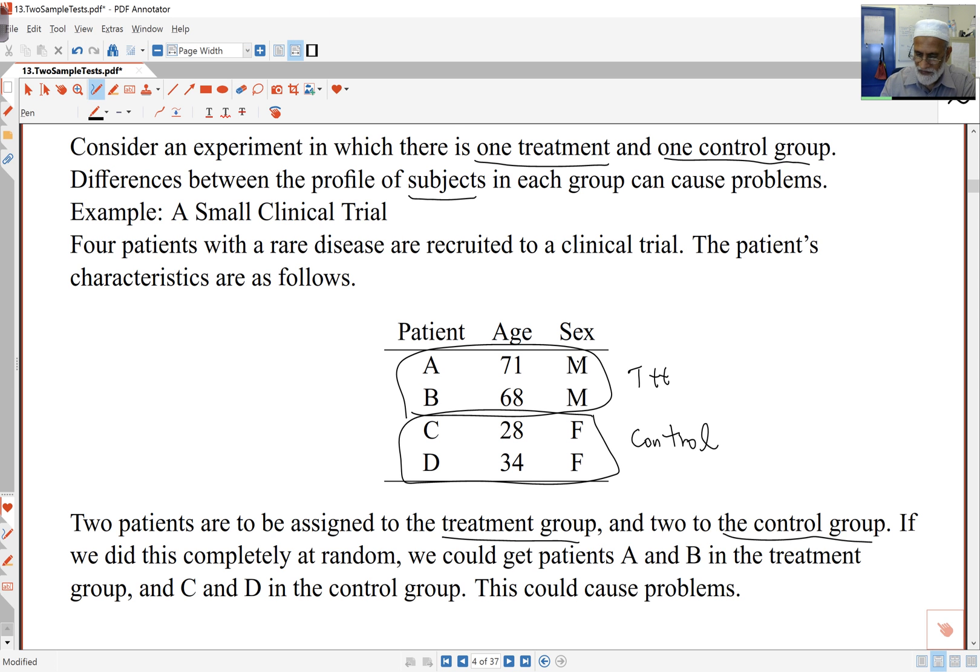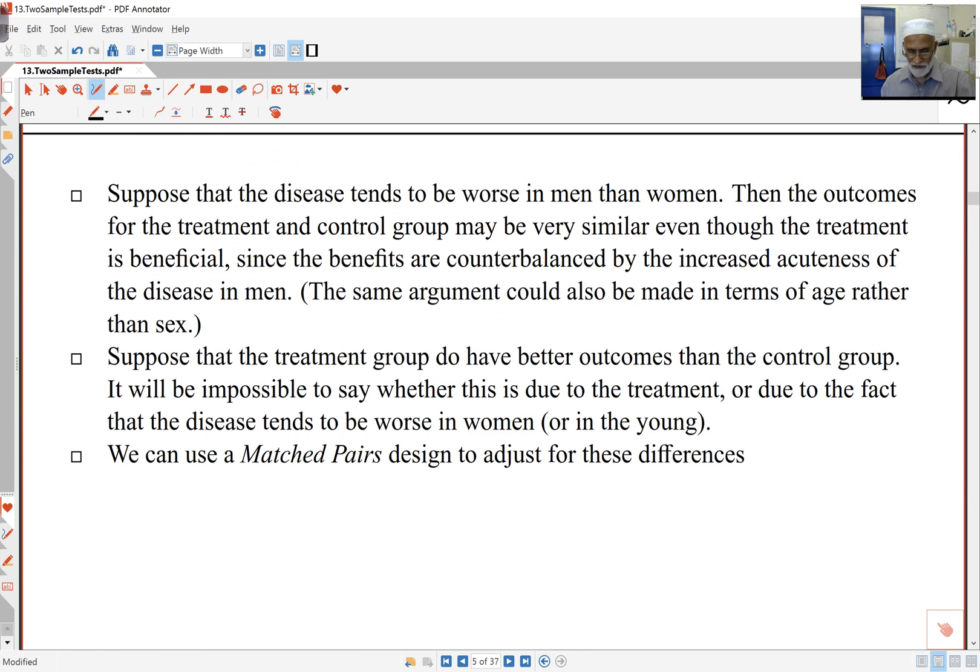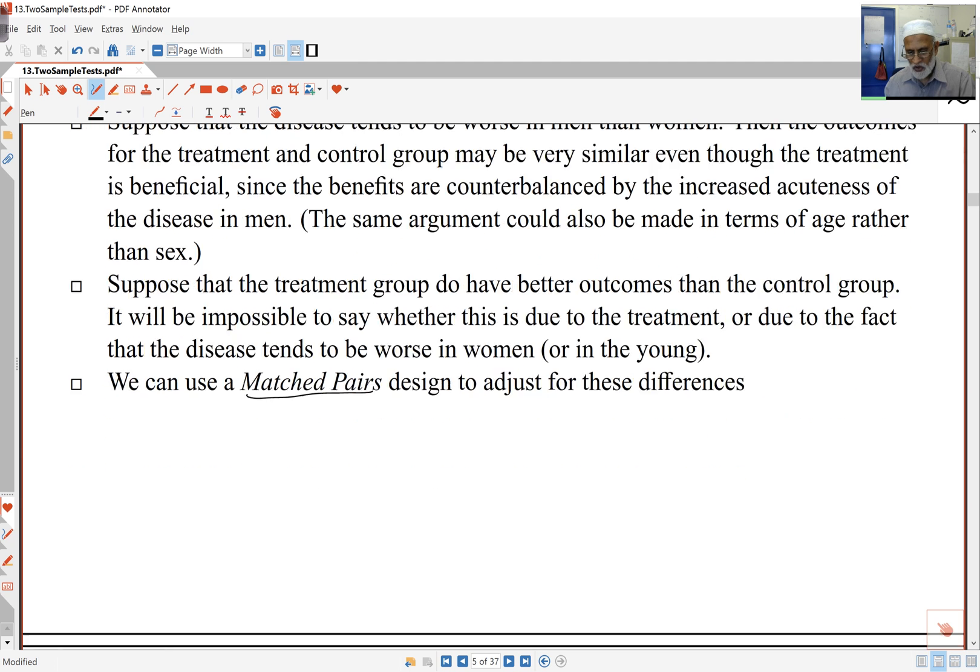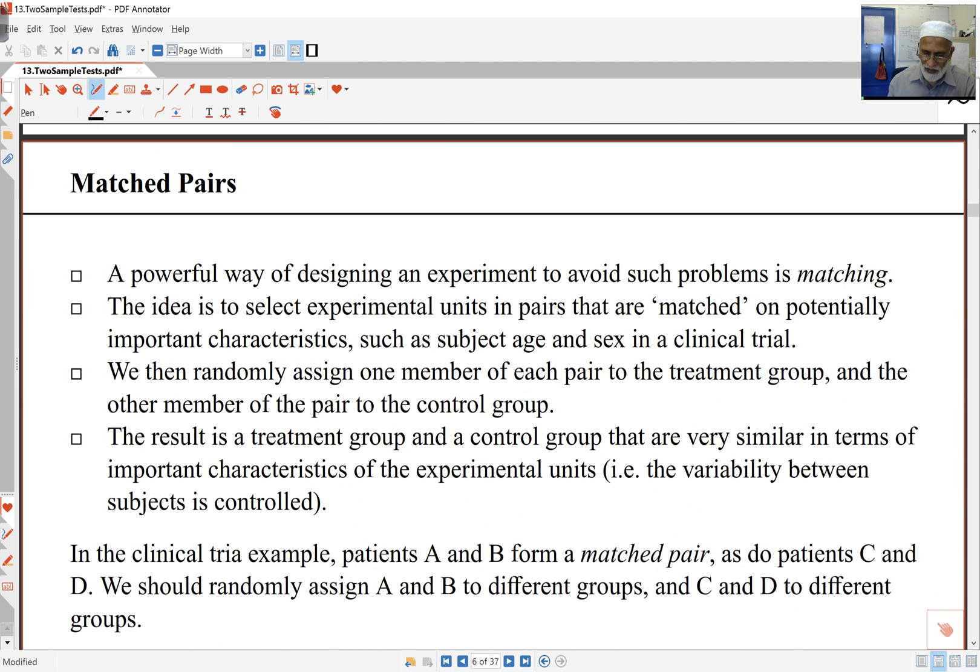So the question is, is there a better way of doing this? What we do is we use matched pairs design, or pair design, where what we do is we make sure that the individuals in the two groups are matched in every possible way, by gender, by every other thing, like ethnicity, for example, or disease level, or health, those kinds of things.